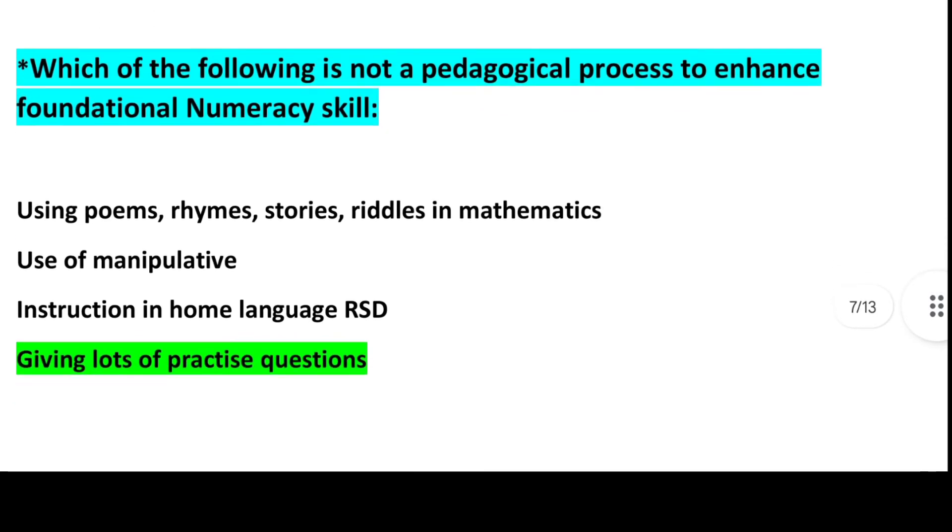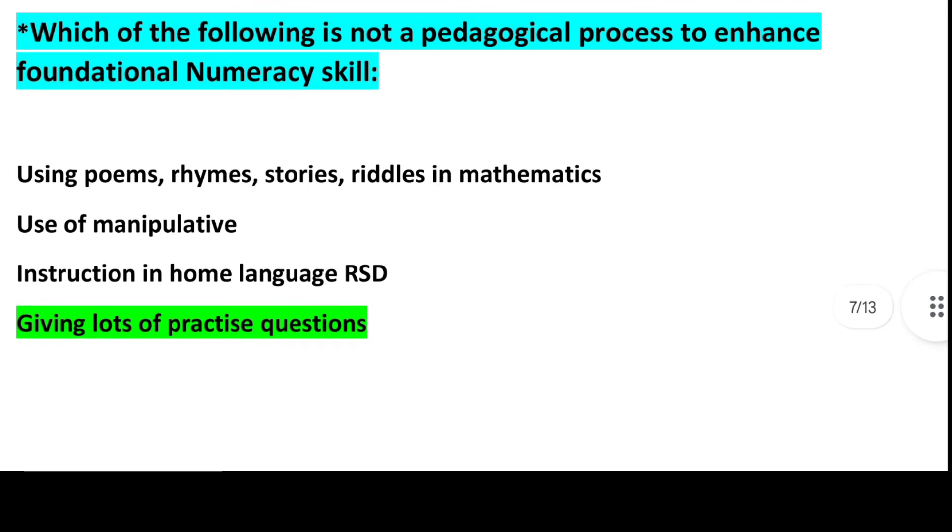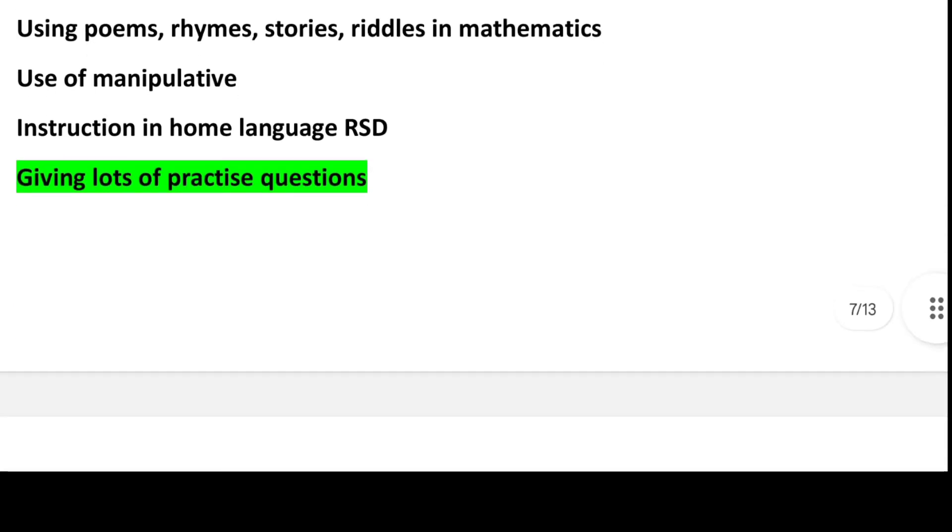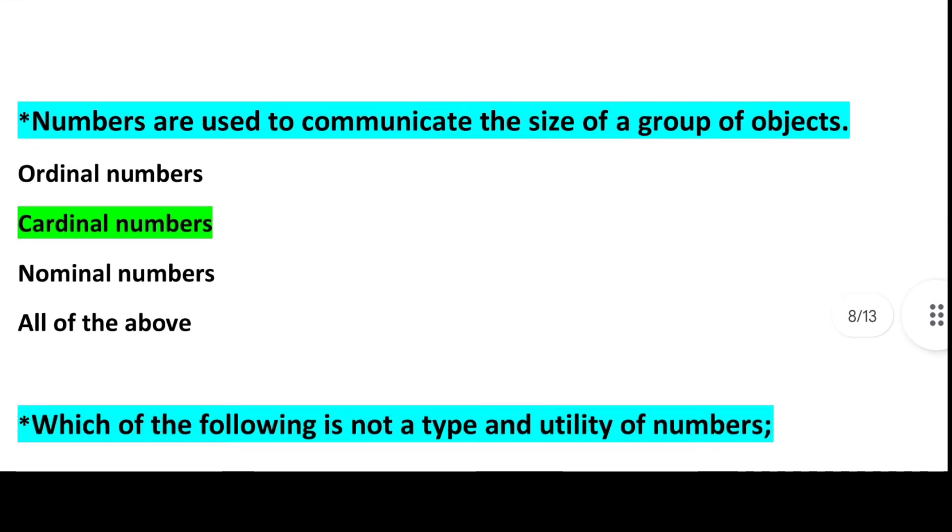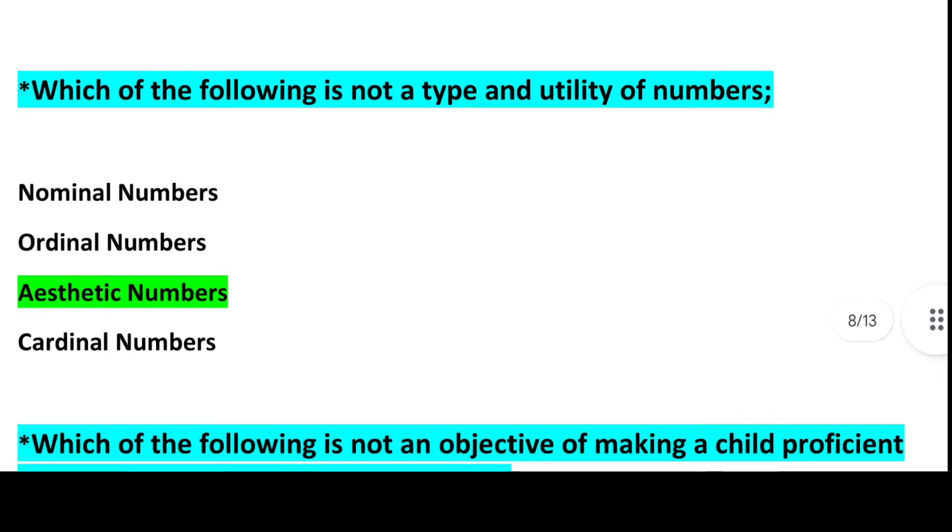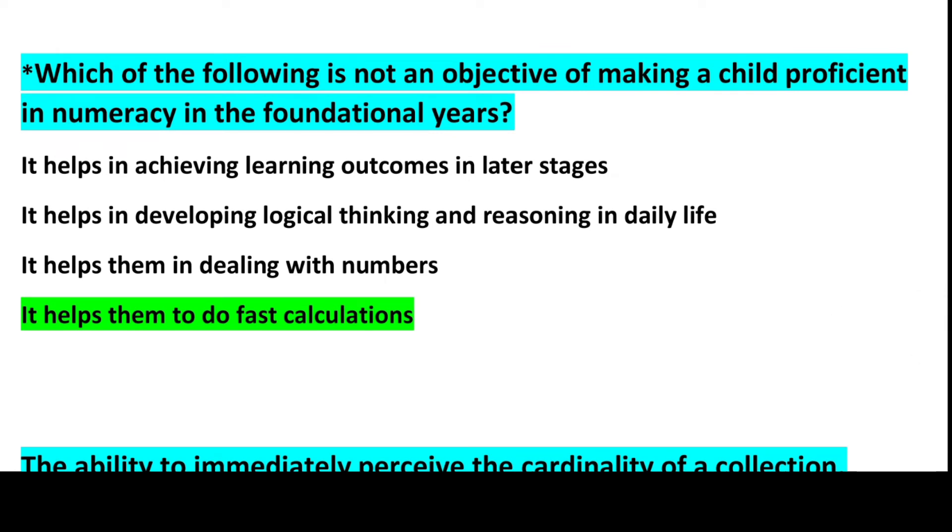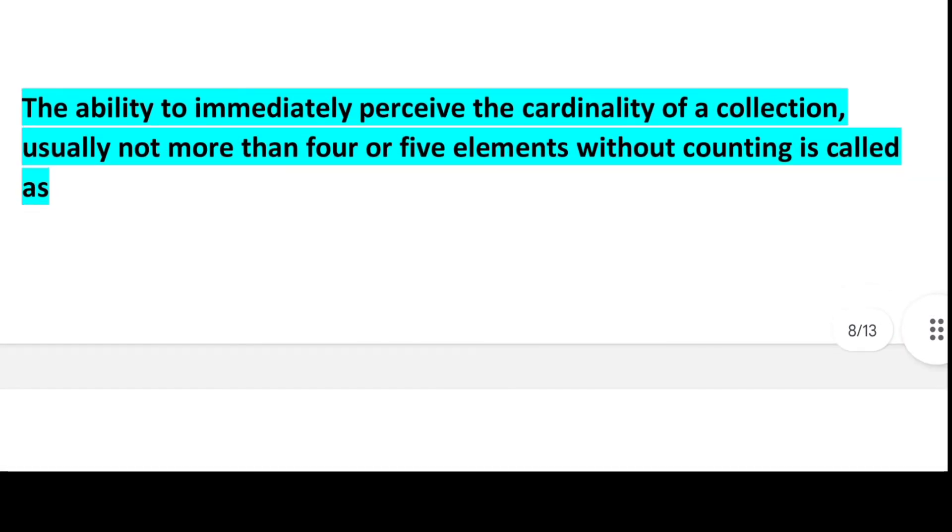Next question: Which of the following is not a pedagogical process to enhance foundational numeracy skill? Answer is Option 4, Giving lots of practice questions. Next question: Numbers are used to communicate the size of a group of objects. Answer is Option 2, Cardinal numbers. Next: Which of the following is not a type and utility of numbers? Answer is Option 3, Aesthetic numbers. Next: Which of the following is not an objective of making a child proficient in numeracy in foundational years? Answer is Option 4, It helps them to do fast calculations.